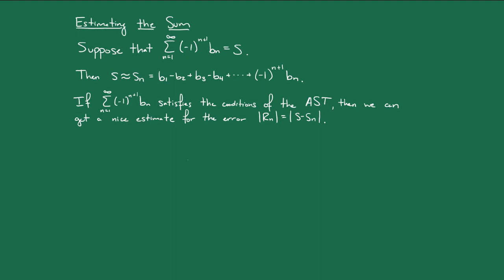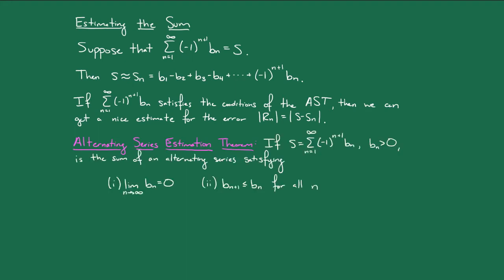This estimation is given to us by the alternating series estimation theorem, which says that if we have a series which satisfies the condition of the alternating series test, then the error you get in approximating s by sn is less than or equal to bn plus 1.